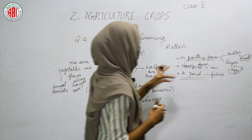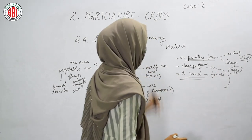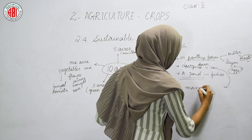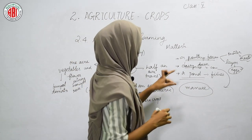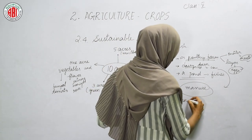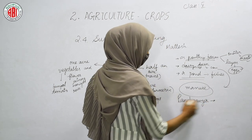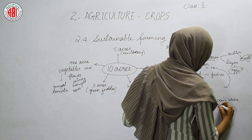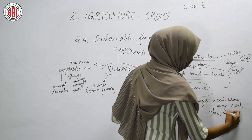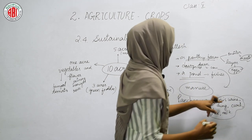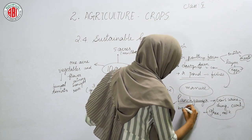By doing all these activities he earns more and more income. The waste products from his dairy farm are used to produce manure. This manure is called Panch Gavia. To make Panch Gavia he needs five cow products: cow's urine, cow dung, cow's curd, ghee, and cow's milk.